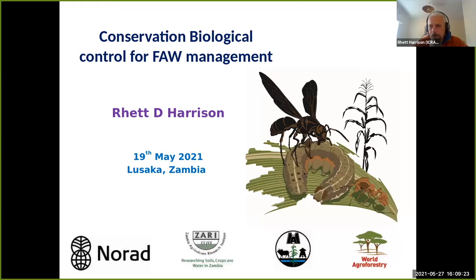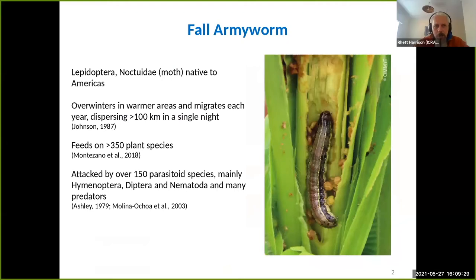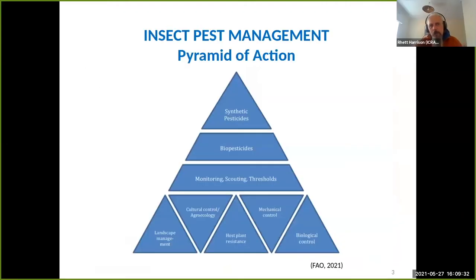When we're talking about insect pest management, a lot of people conceptualize it as this pyramid of action. On the bottom layer there's a series of different management approaches that limit the abundance of pests — for example, increasing host plant resistance, mechanisms such as mechanical control, biological control, and landscape management. Agroecology and those types of controls fit into that category.